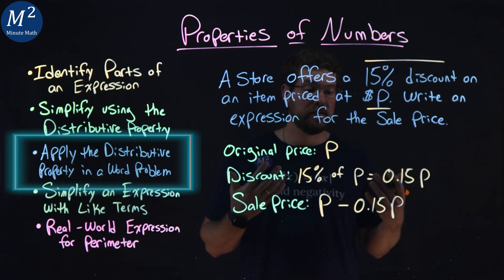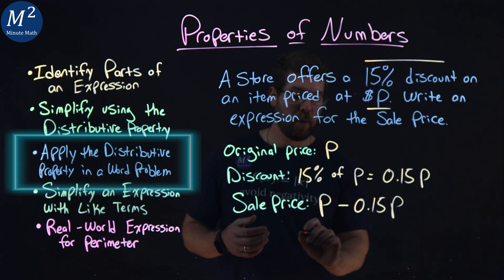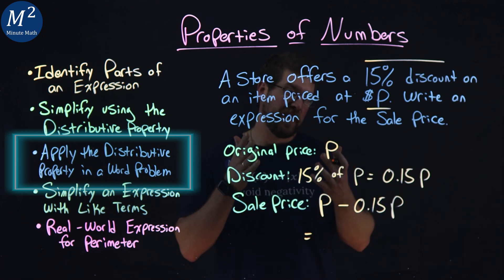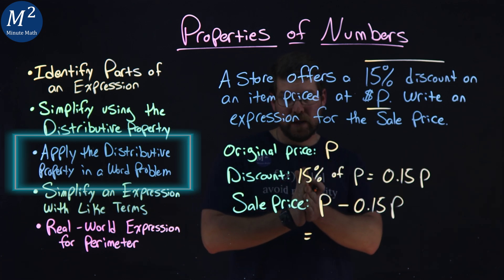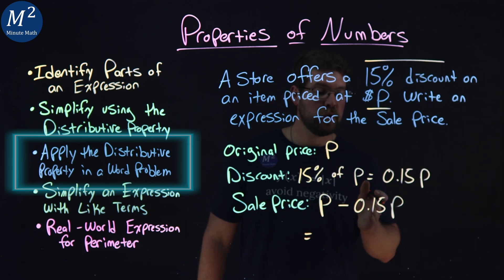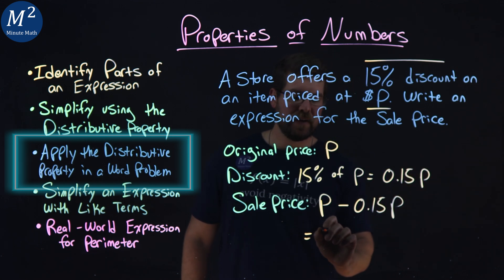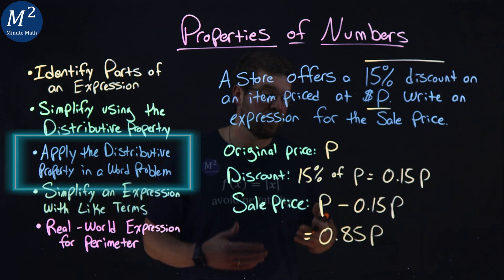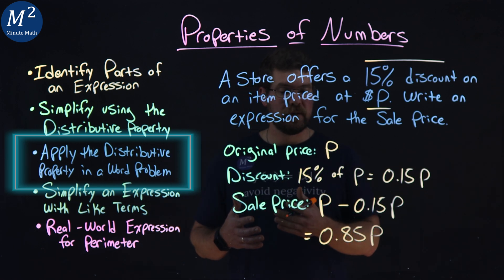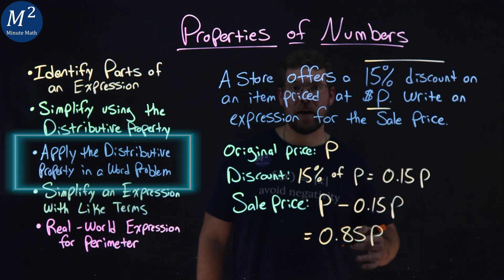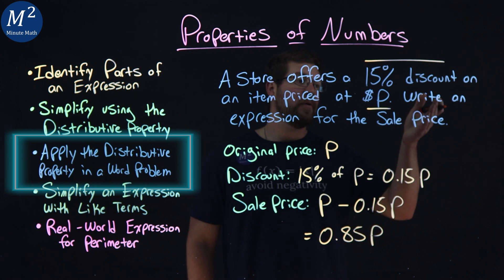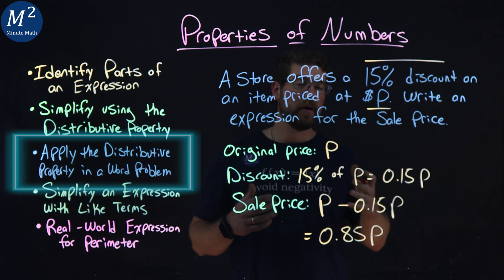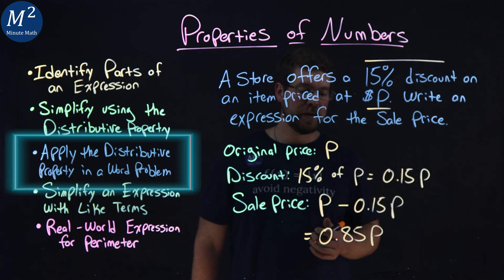We can simplify this even more. p, like 1p, minus 0.15p is 0.85p. So our sale price is 0.85p. We wrote an expression for our sale price and got 0.85p.